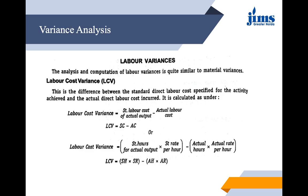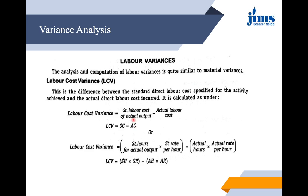If I talk about labor cost variance, as the name itself suggests, there is a difference between the cost of labor — our standard direct cost is specified — and for whatever activity we need to get done, the actual direct labor cost incurred is compared with it. So the formula is: Labor Cost Variance = Standard Labor Cost of Actual Output minus Actual Labor Cost. We can calculate that as standard hours of actual output into standard rate per hour, minus actual hours into actual rate per hour.